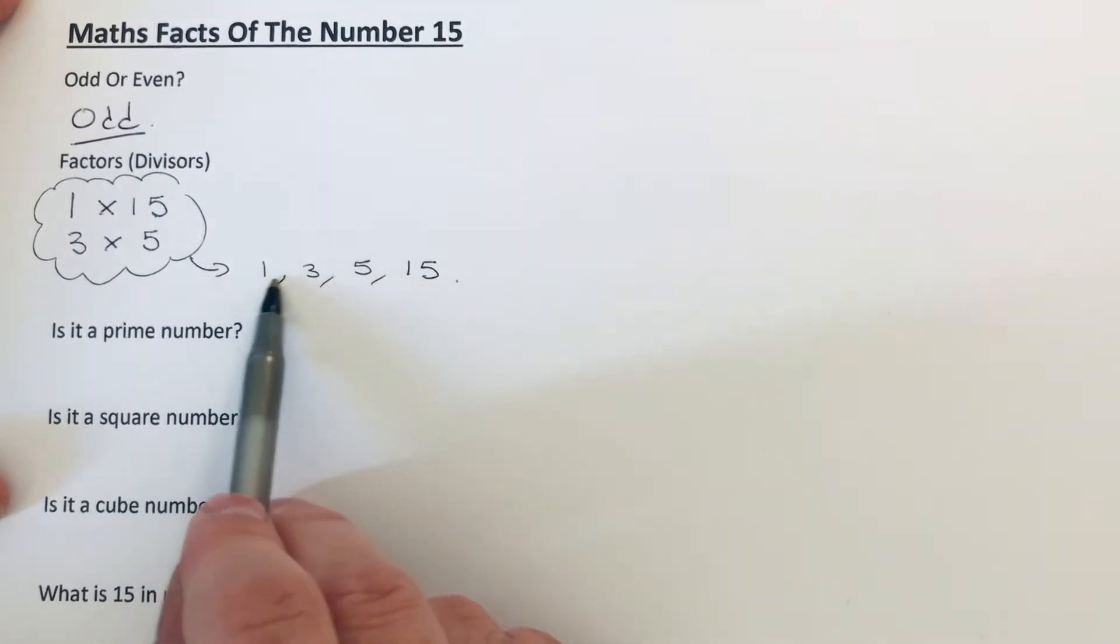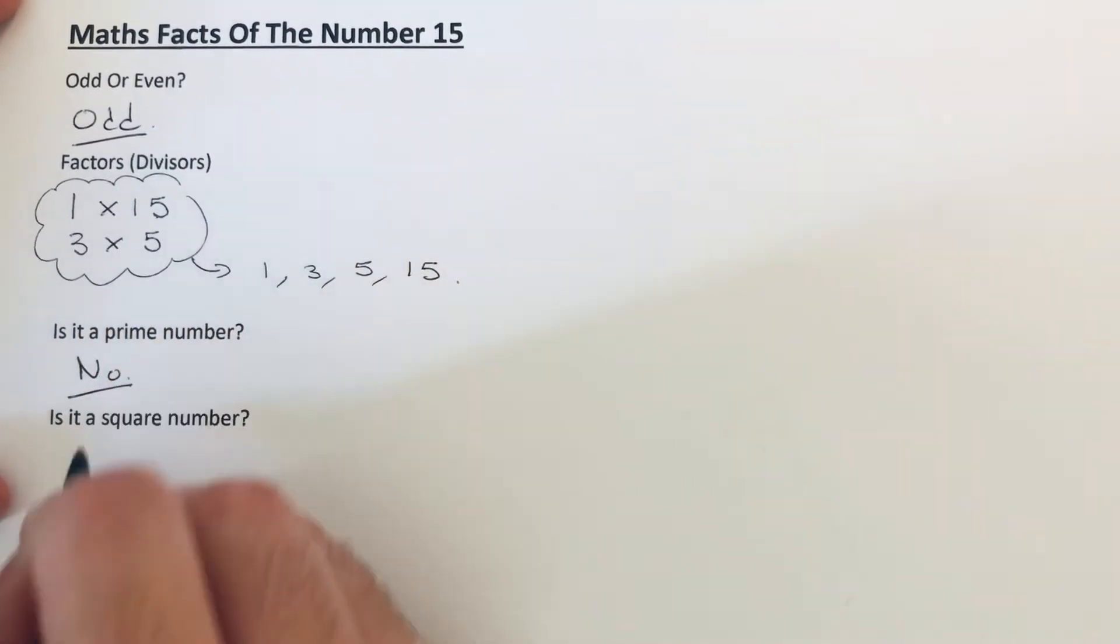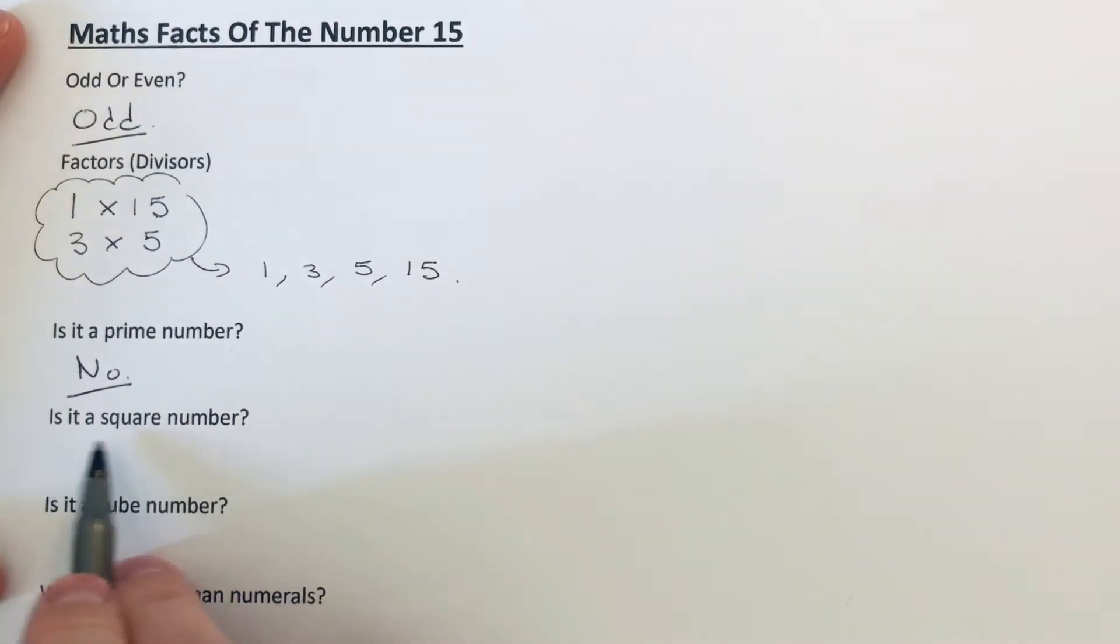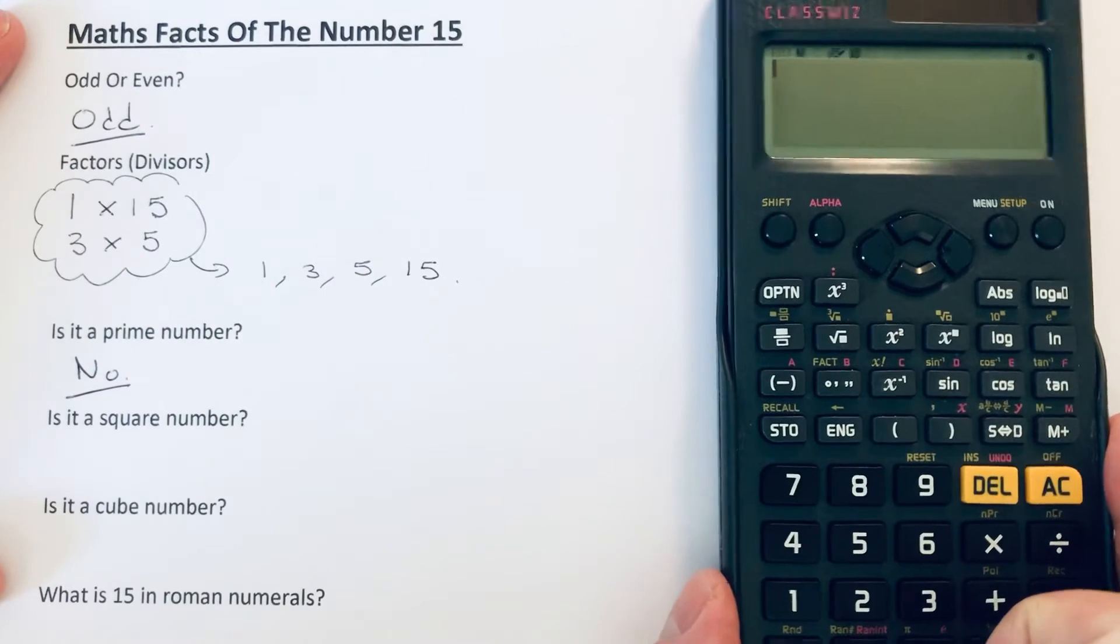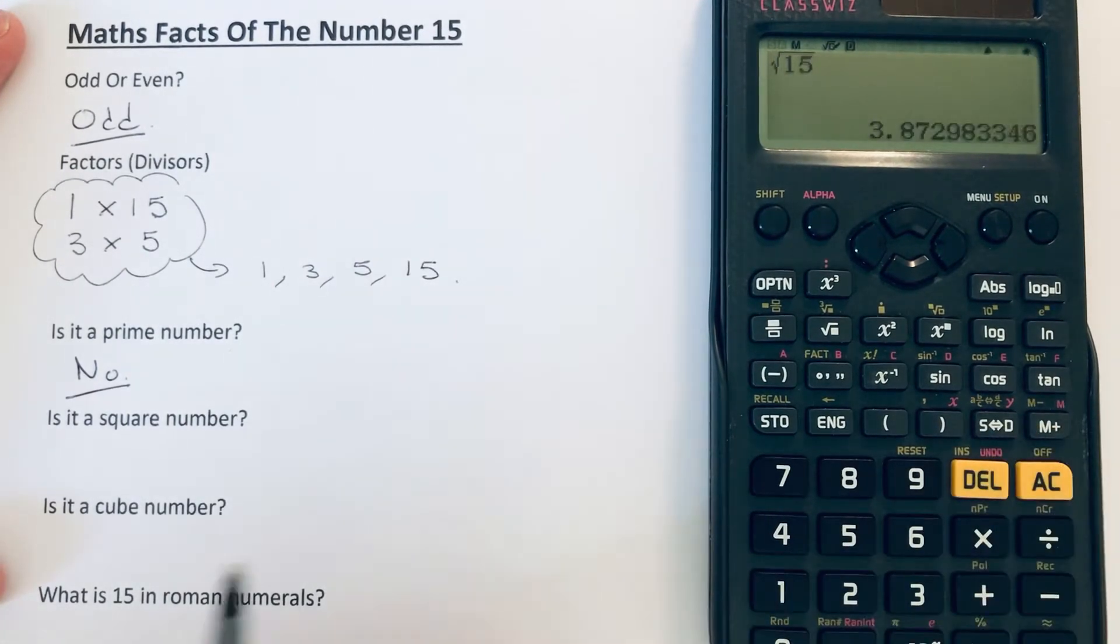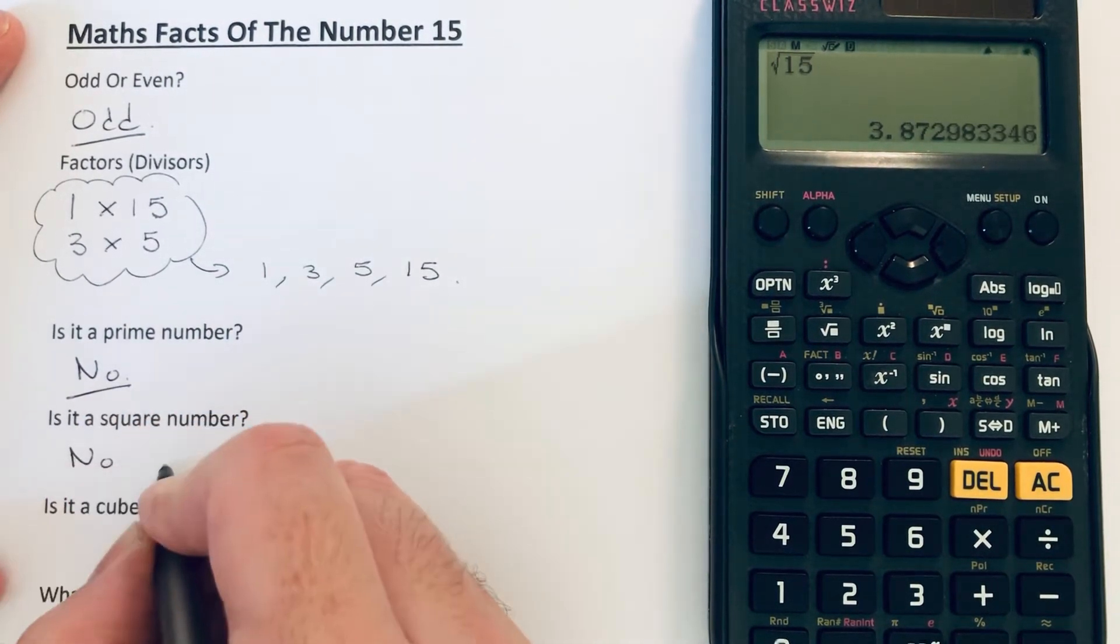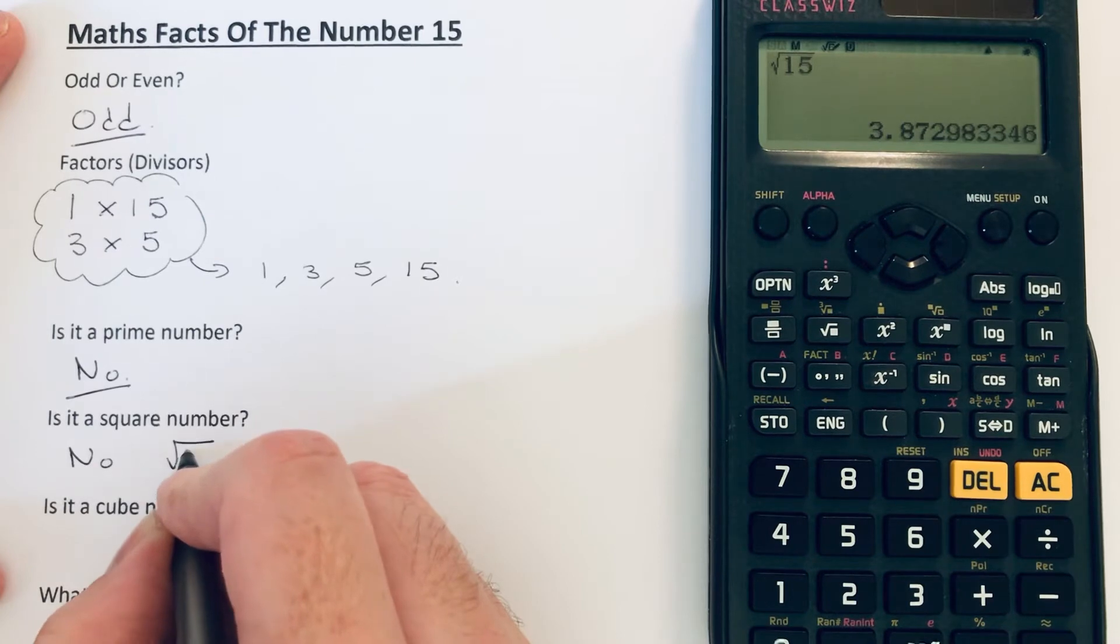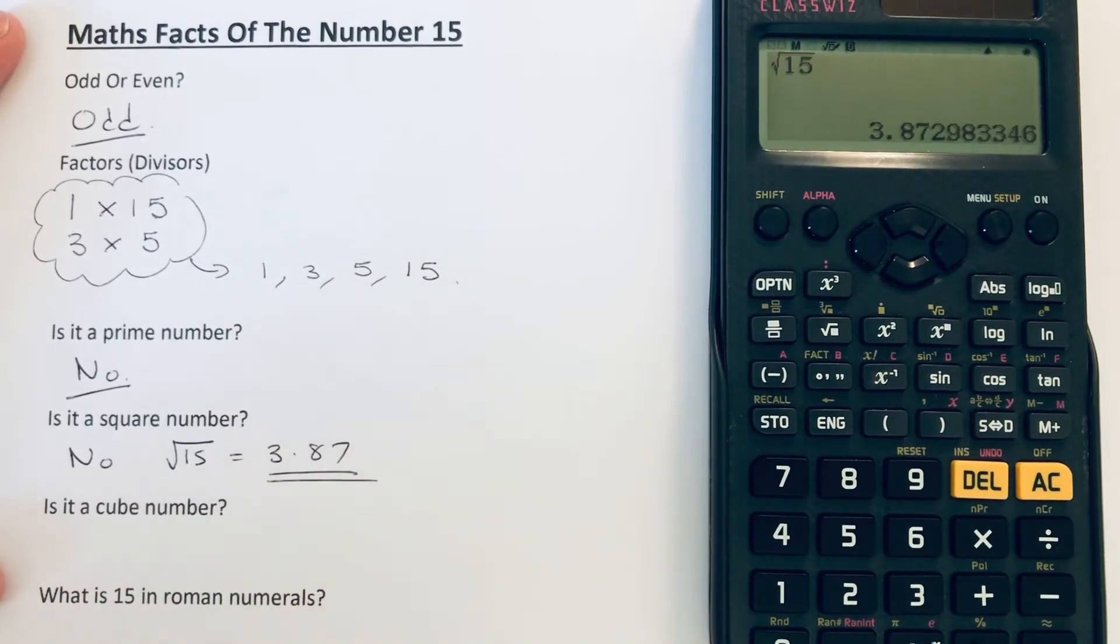Is it a square number? If it's a square number, we should be able to square root 15 to give a whole number. The square root of 15 is 3.87, so since that's not a whole number, it's not a square number. So is it a cube number? If it's a cube number, we should be able to cube root 15 to give a whole number.